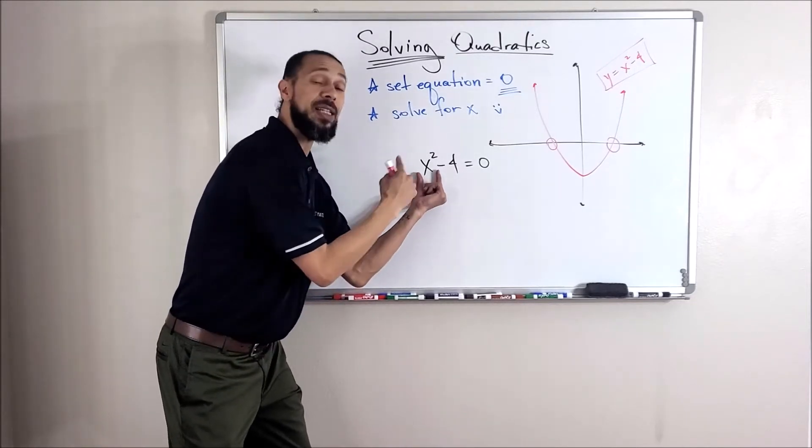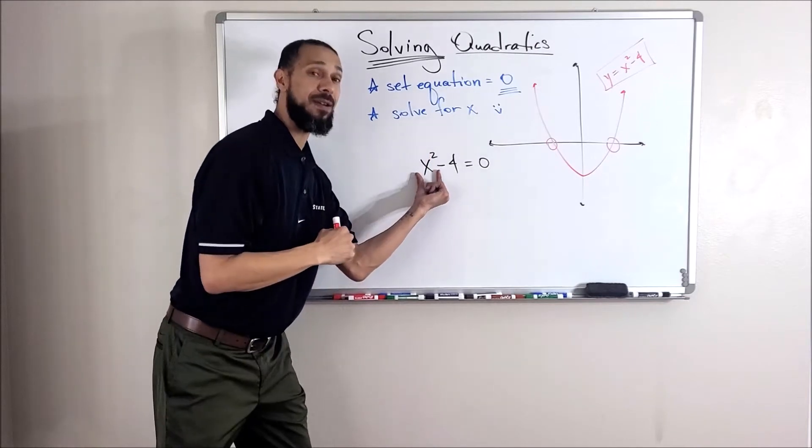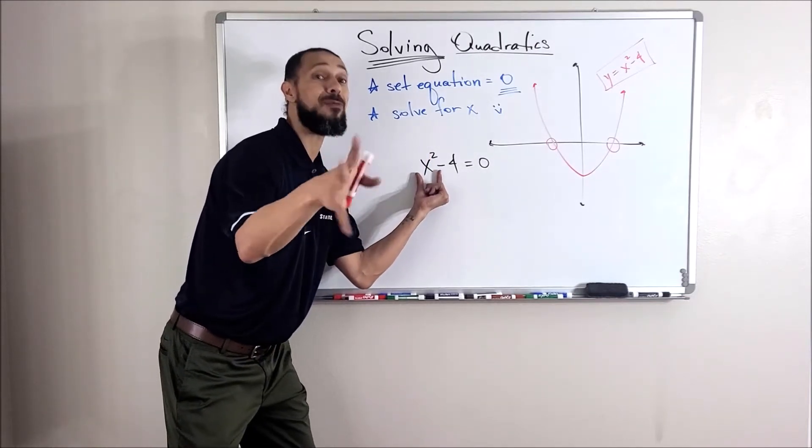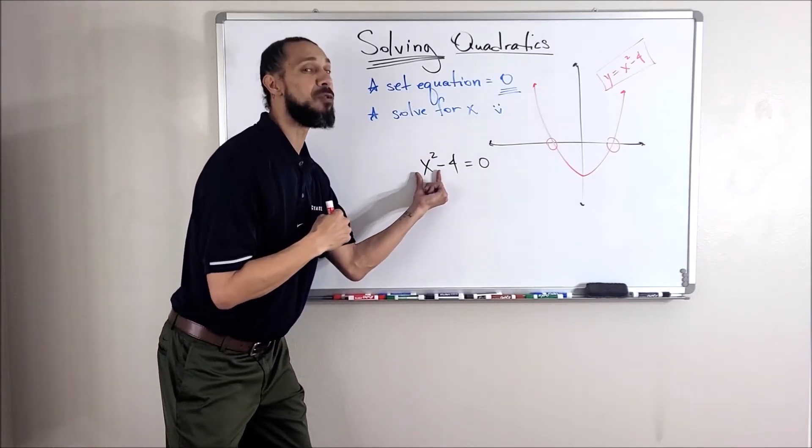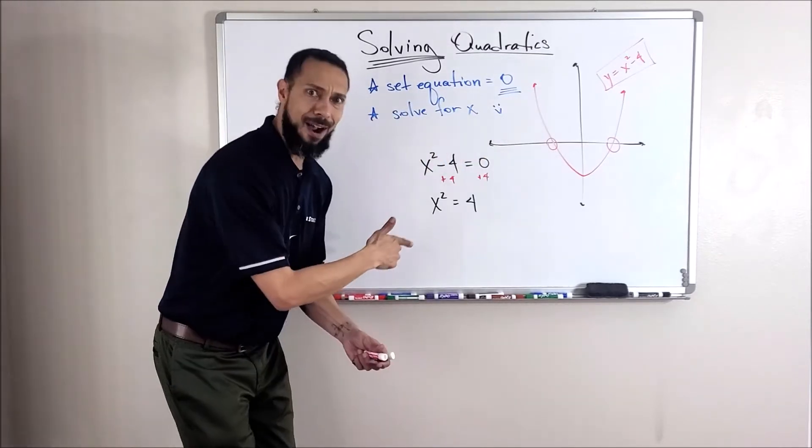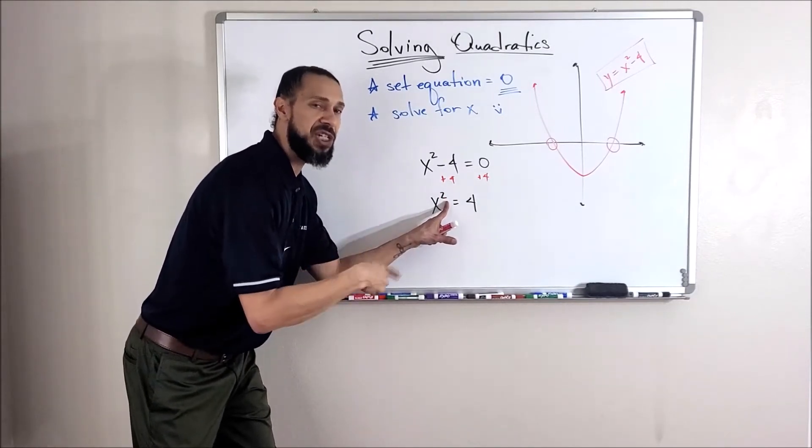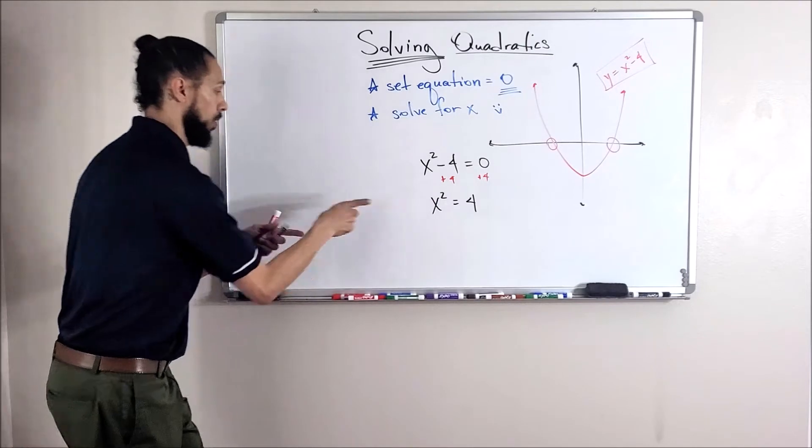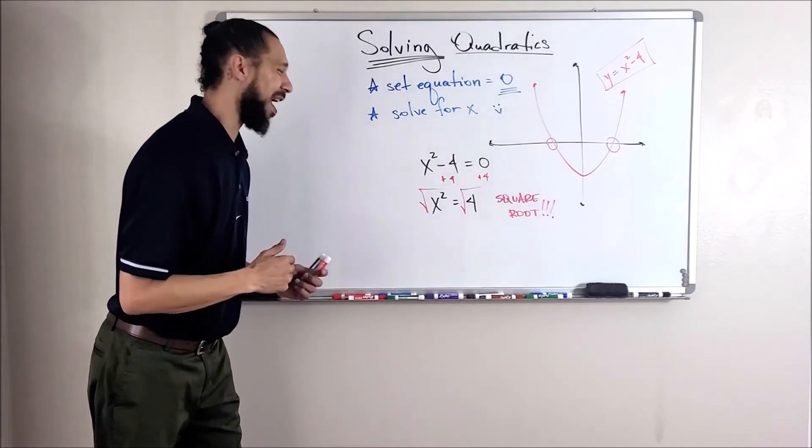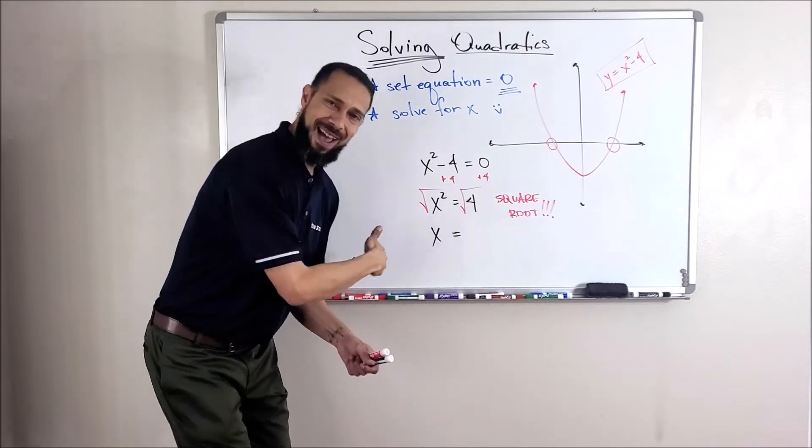Now, my next step is to try to get this x squared alone so I can do a square root and undo that square. That's the opposite operation for squaring: square roots. Let's get this negative 4 to the other side. Just like that. And now to undo this square, the opposite operation for squaring is square root. So if these undo each other, I'll just have x.